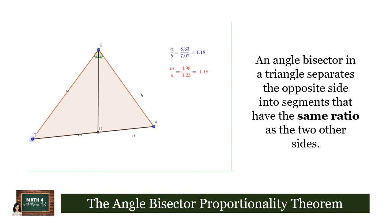It states that an angle bisector in a triangle separates the opposite side into segments that have the same ratio as the other two sides.